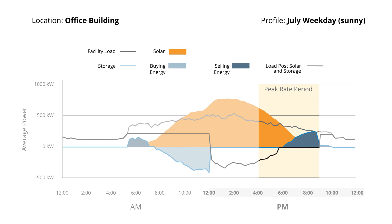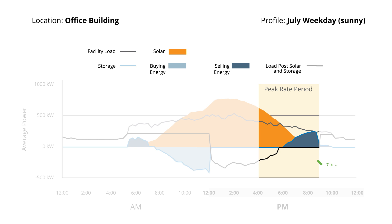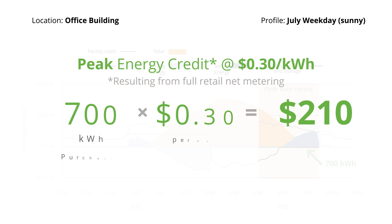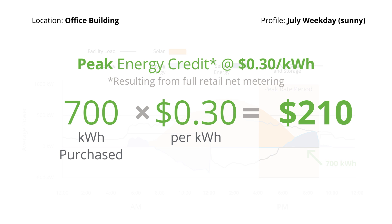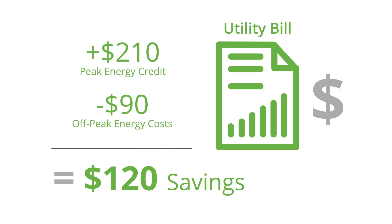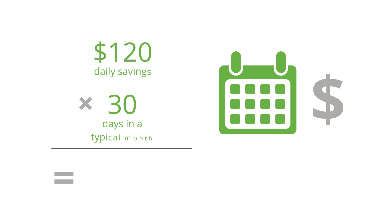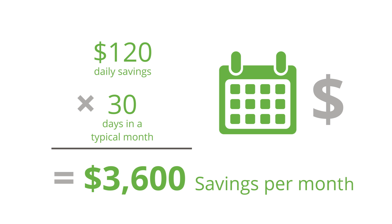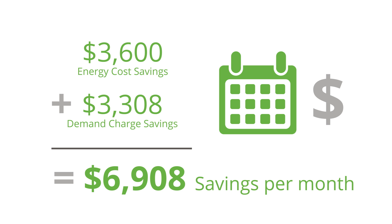There's a different story to tell during the more expensive peak rate period. Sunvault DX storage doesn't charge or buy any energy during this time of use. Instead, it only discharges or sells — 700 kilowatt hours to be exact — which calculates to $210, or 700 times the peak period rate of 30 cents per kilowatt hour. By subtracting what the customer pays for energy during off-peak hours from the energy credit they receive from discharging during peak hours, the total savings is $120 on this typical summer day. Multiply that by 30 and Sunvault DX storage would save this customer $3,600 during a typical summer month — additional energy savings on top of solar alone, and not even accounting for any demand charge savings.